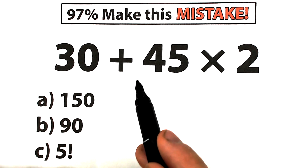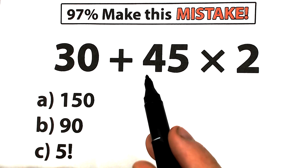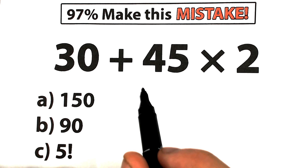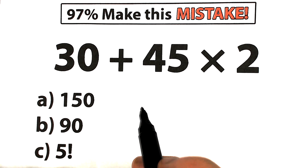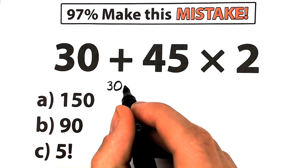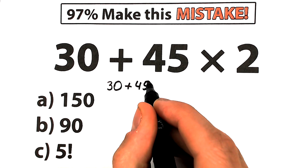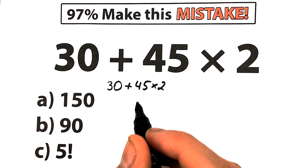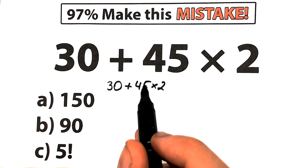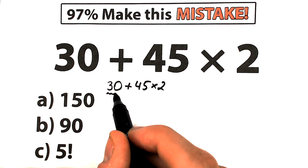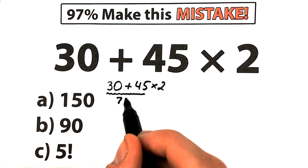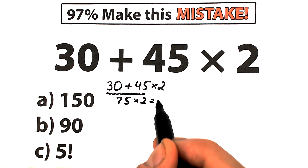What do you think is the correct answer? We have three options, so choose one and write your answer in the comment section — but don't use your calculator. So one part of students who don't know about order of operations solve this from left to right: 30 plus 45 equals 75, and 75 times 2 equals 150.